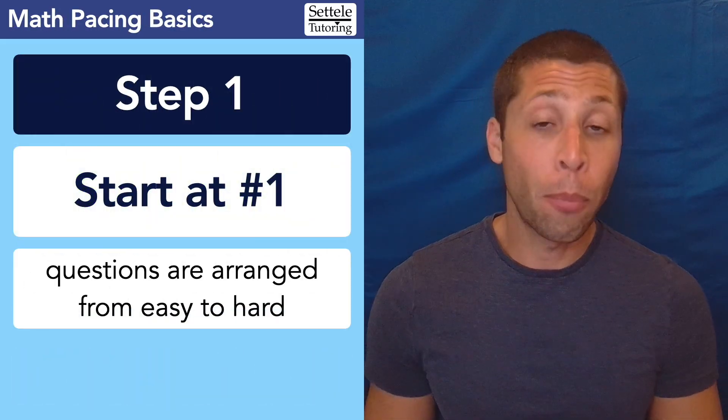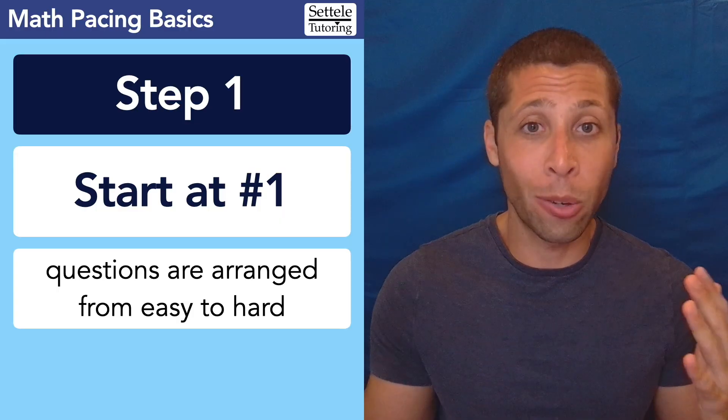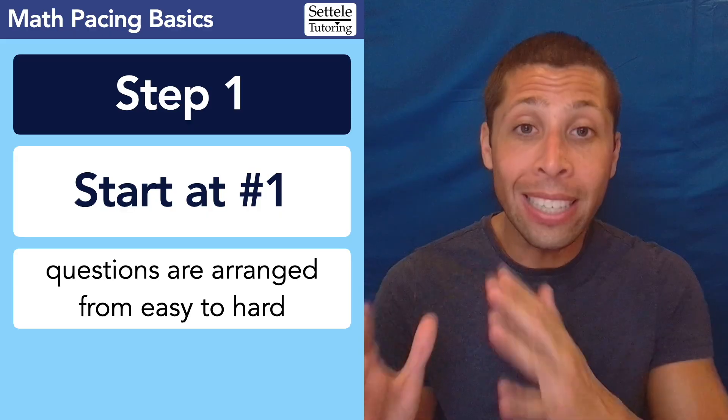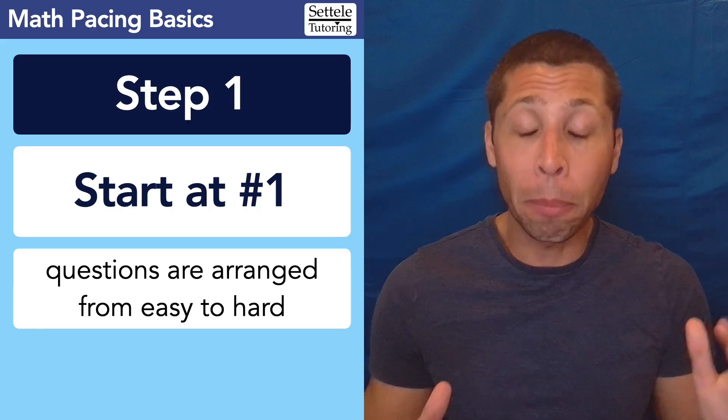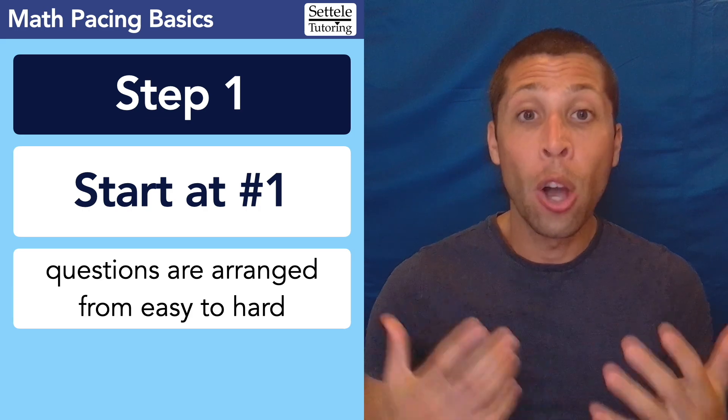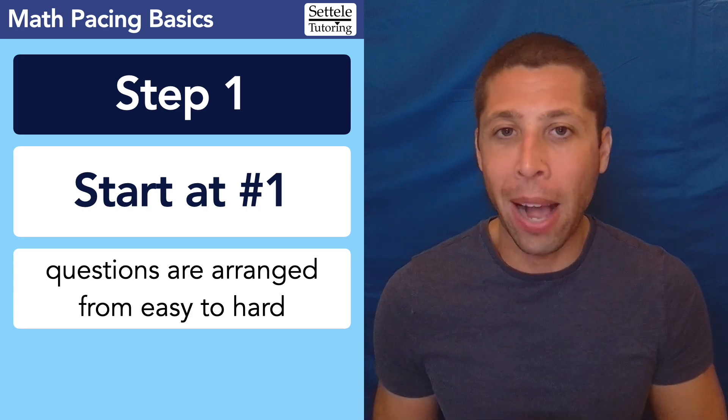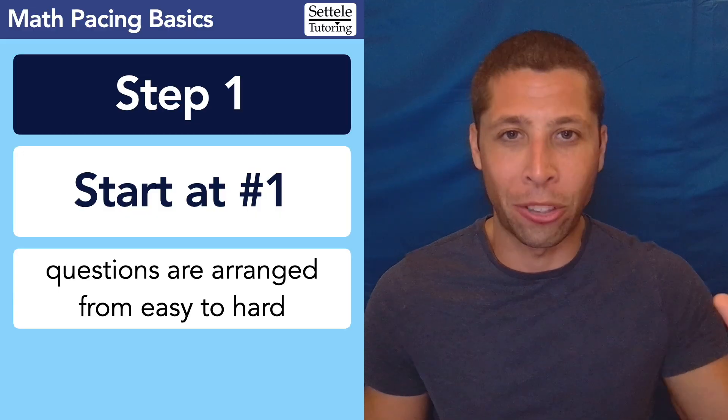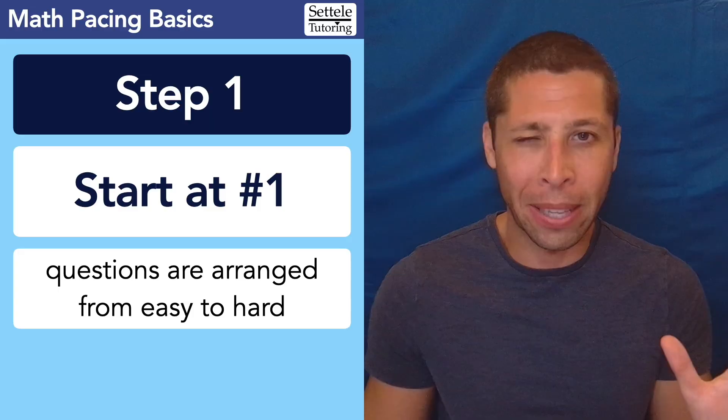Let's go step by step. Step one seems obvious: start at question number one. The reason we're doing that is the questions are arranged from easy to hard. It's not perfectly linear, but it is the case that the easier questions are up front and the harder questions are at the end. We want to do the easy ones first and get as many points as possible without risking any careless mistakes. So you do not want to start with the hard questions. That's a dumb idea people ask me about all the time.